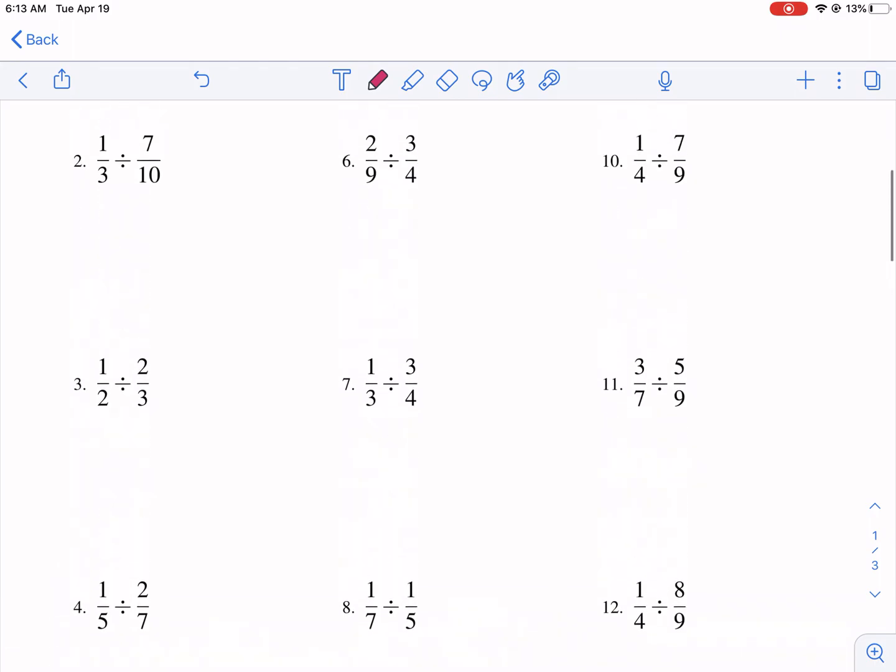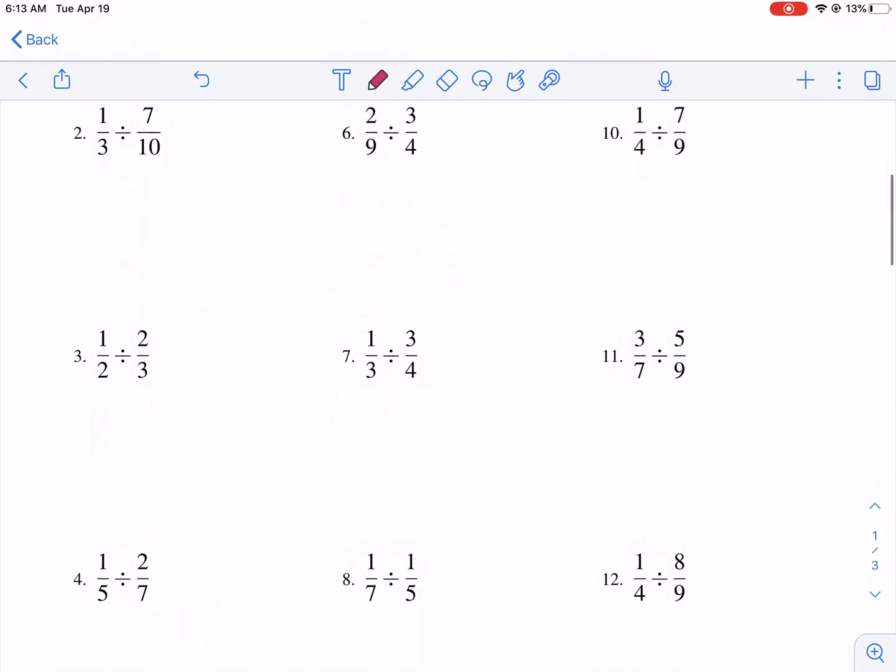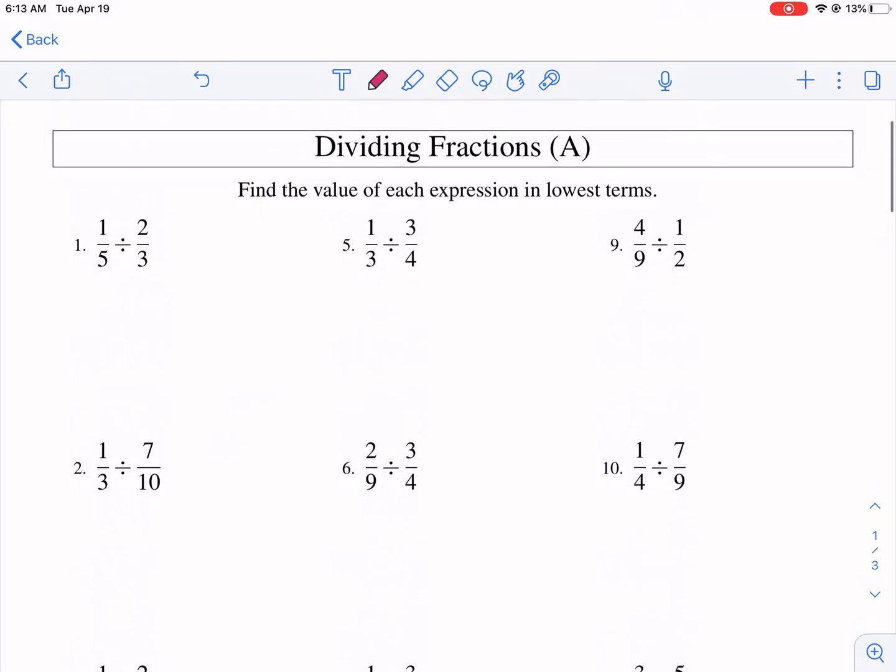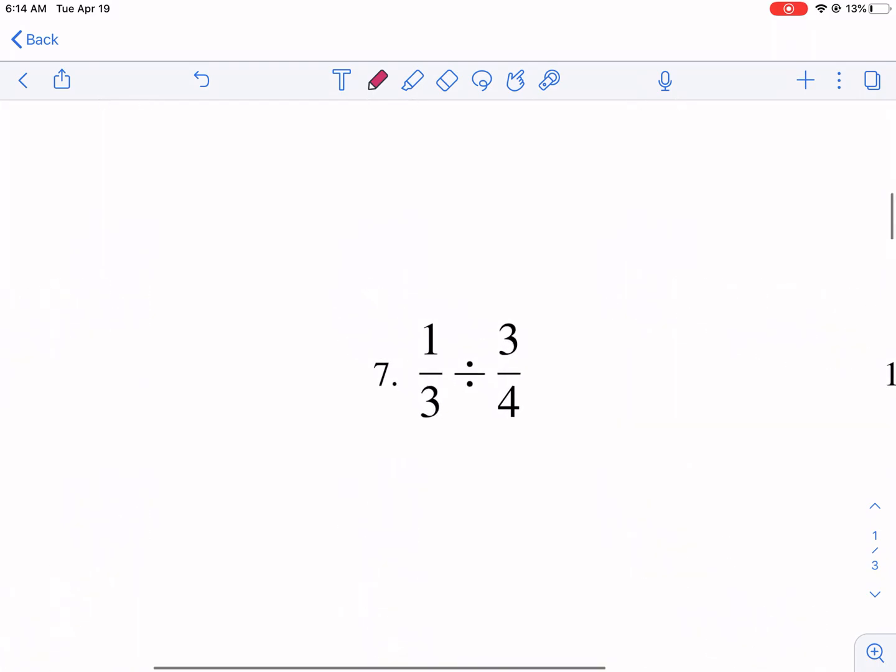So we have a bunch of fractions that we're dividing here and you can see they're all mostly proper, no improper fractions. I think that's what it says. In the description it says that it's all proper fractions. But what is it talking about when we're dividing fractions?